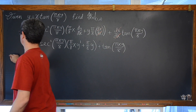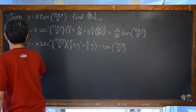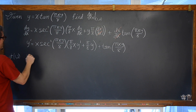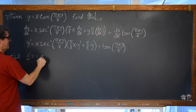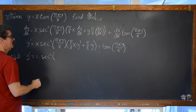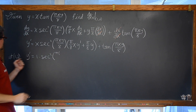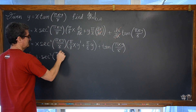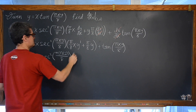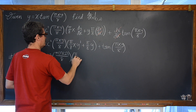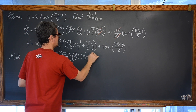So at the point (1, 2), we have y prime is equal to — well, x is going to be 1 — so then we have secant squared of (pi times 1 times 2 over 8) times (pi over 8 times 1)·y prime, plus (pi over 8 times 1)·y prime, plus (pi over 8 times 1)·y prime, plus pi over 8 times 1.